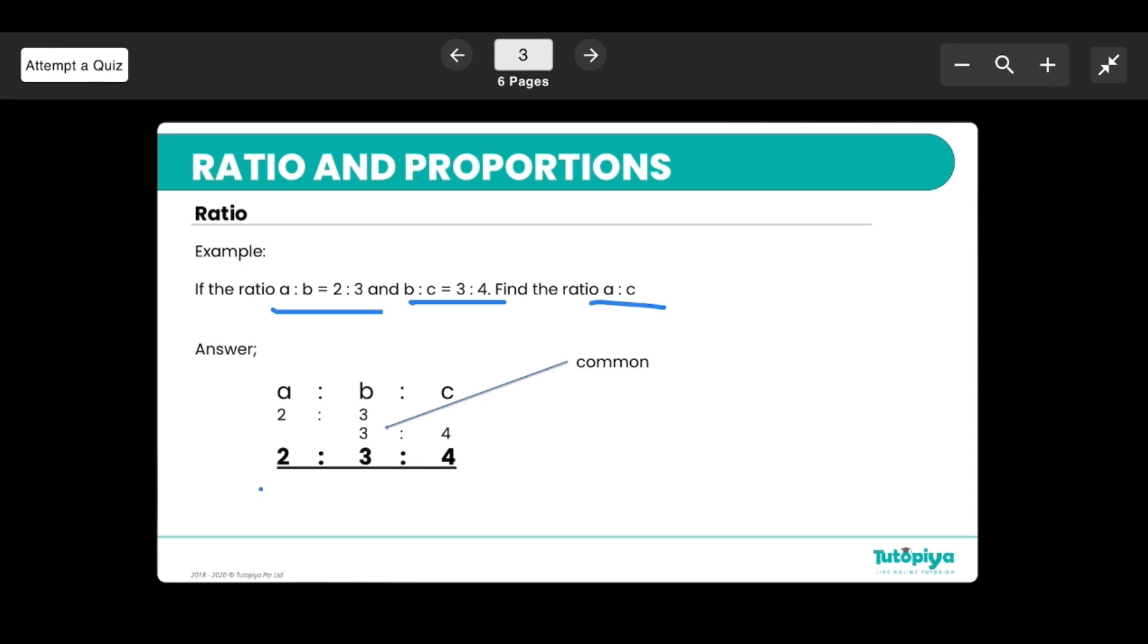So if we put it in one line, a is to b is to c is basically 2:3:4, which then means that the ratio of a:c is 2:4, which again, if you want to use equivalent ratios, you can simplify this to 1:2.